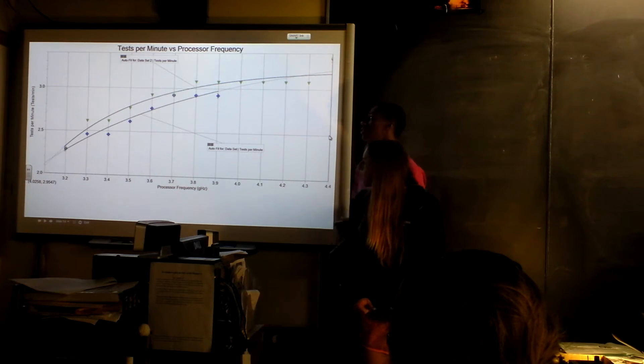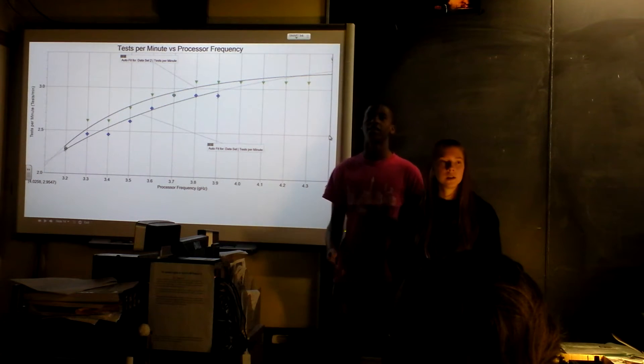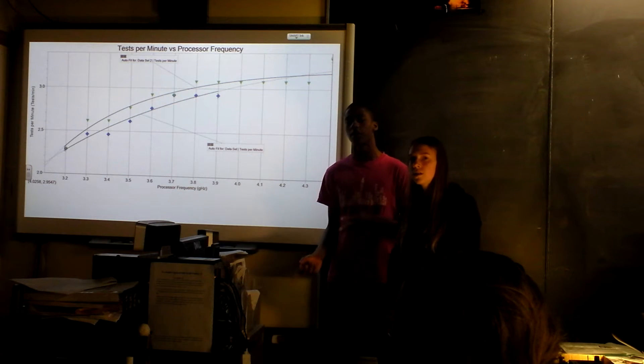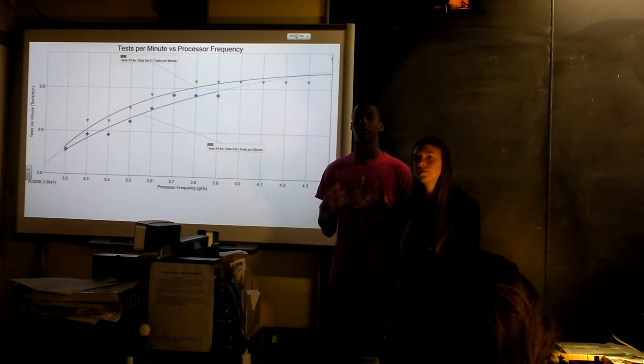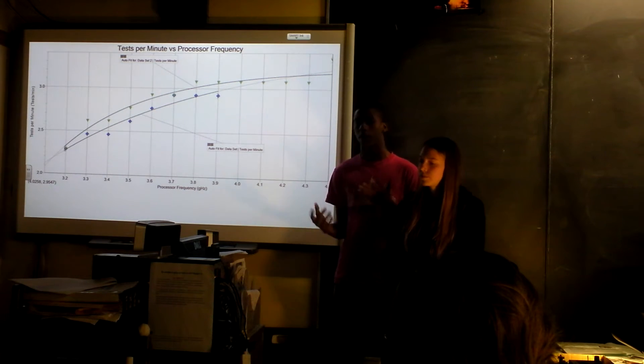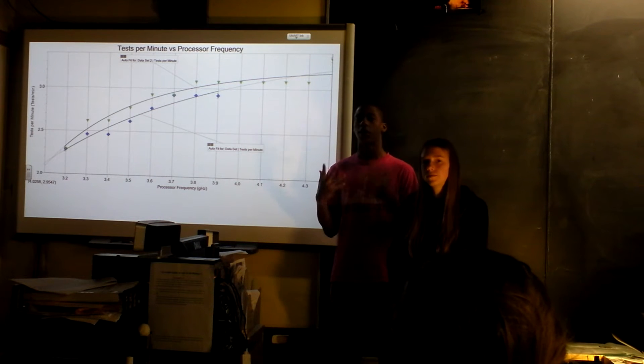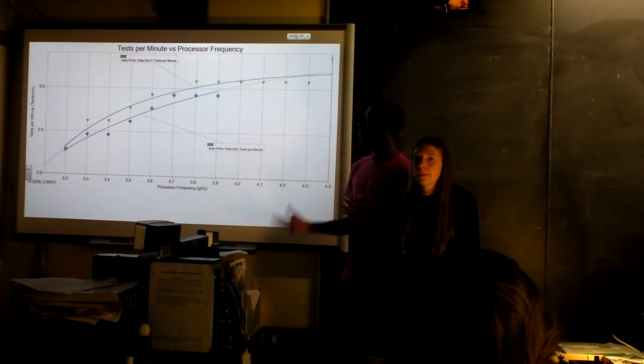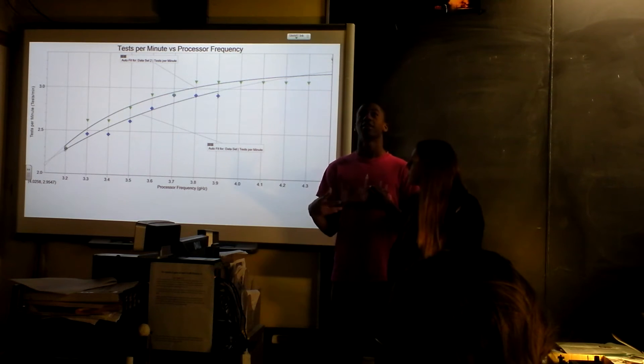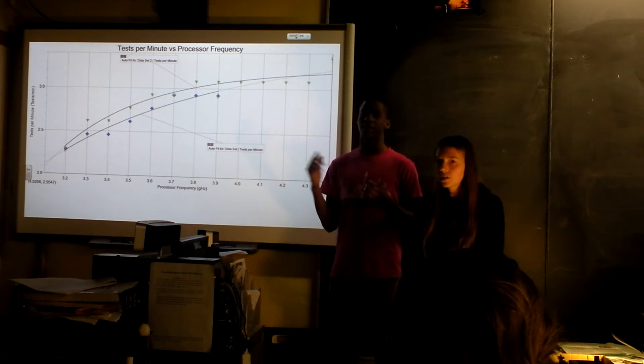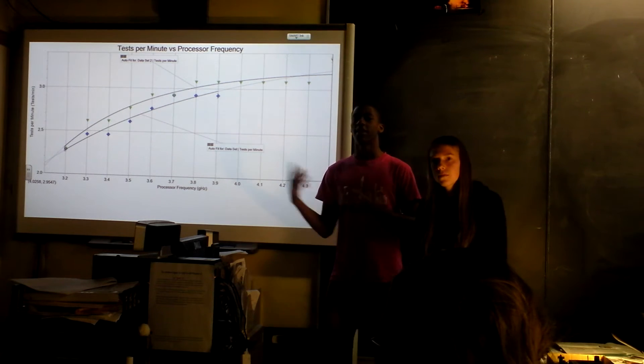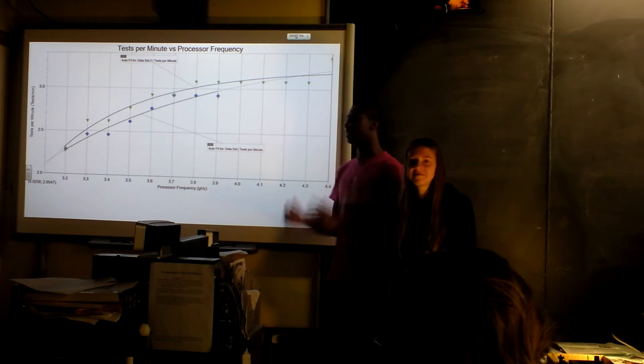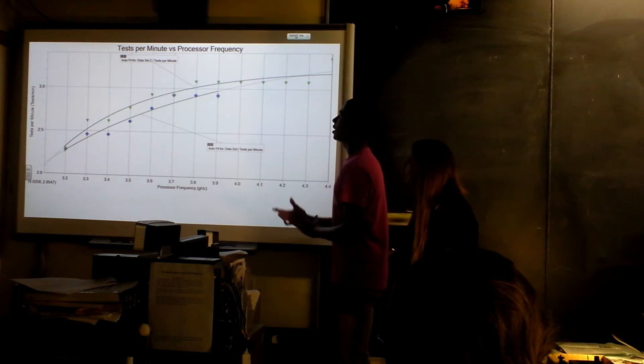And then this is tests-per-minute versus processor frequency. What we did to test the performance of the processor was to run this program called Prime95. And it uses all these complicated methods to obtain prime numbers. So the processor's using all this power to generate hundreds of thousands of prime numbers really quickly. And each test is hundreds of thousands of prime numbers with these really complicated methods. And you can run it for 24 hours, and it'll do tons of tons of different algorithms and get huge numbers.